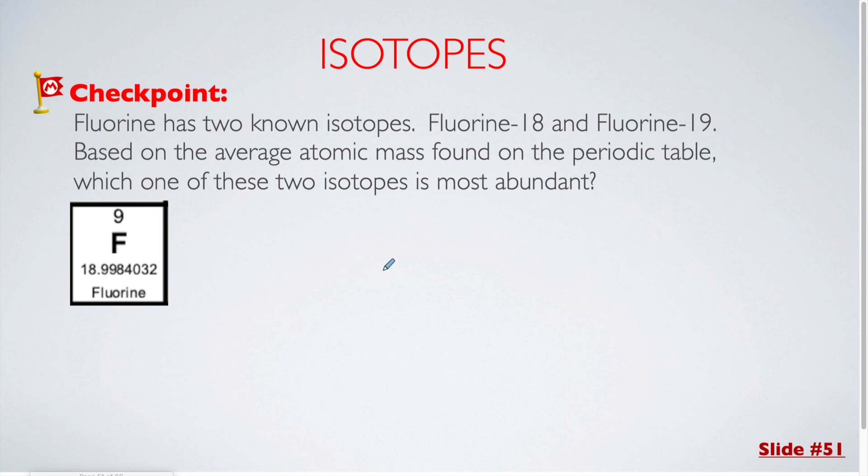For this checkpoint, fluorine has two known isotopes, fluorine-18 and fluorine-19. Based on the average atomic mass found on the periodic table, which of these two isotopes would be most abundant? If we look at the symbol on the periodic table, we can see that the weighted average is extremely close to 19. That tells us that we are more likely to have a lot of fluorine-19 as opposed to fluorine-18 since it's skewed in that direction. Our answer here would be fluorine-19. That one is more abundant because the average is closer to that mass.